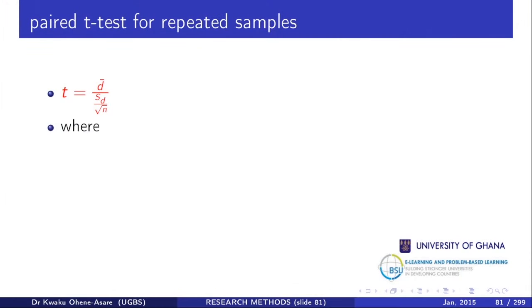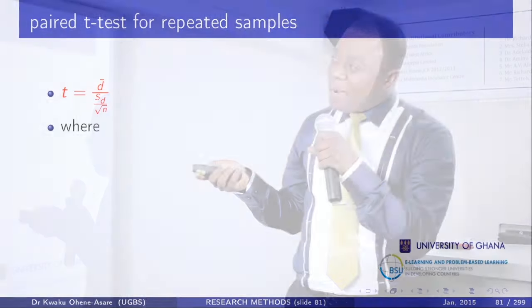The t-calculated formula is not straightforward. Remember, this is a two-tailed test. When you see a bar on top of something, it indicates a mean. So D-bar is the mean of the sample differences.